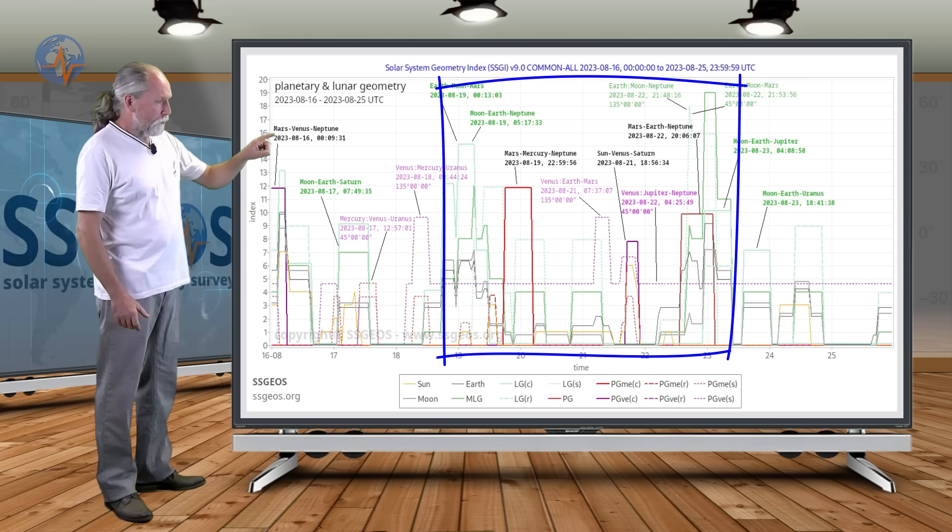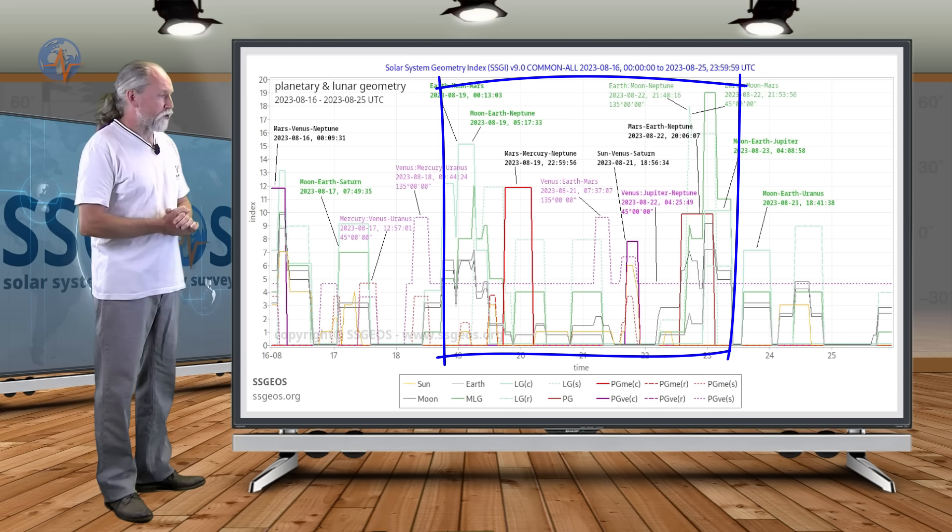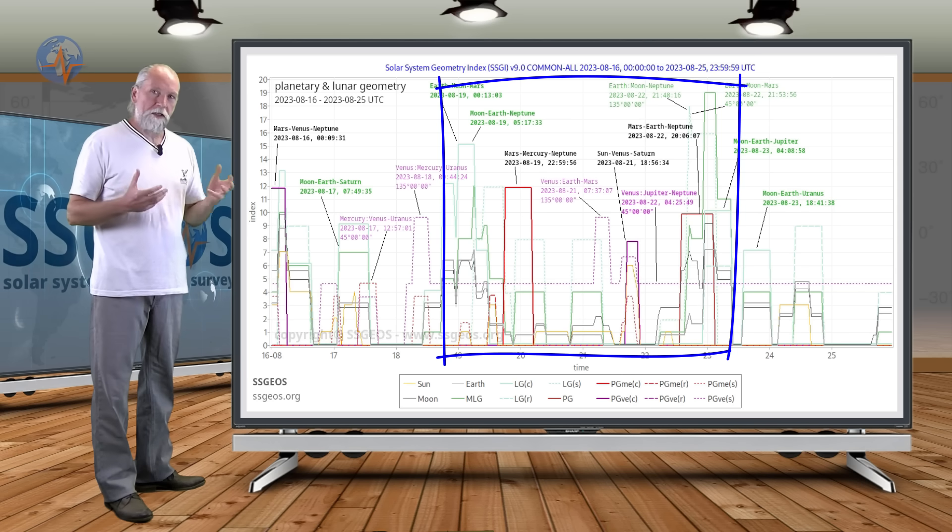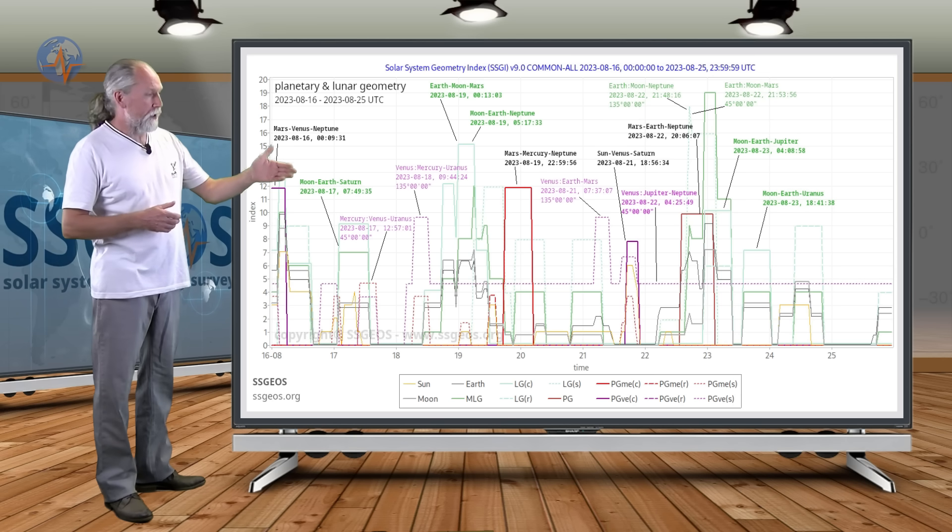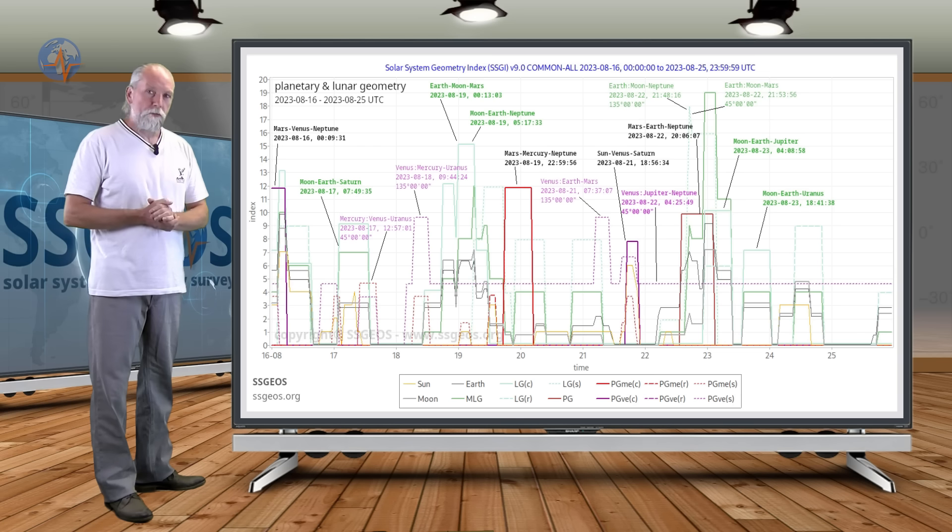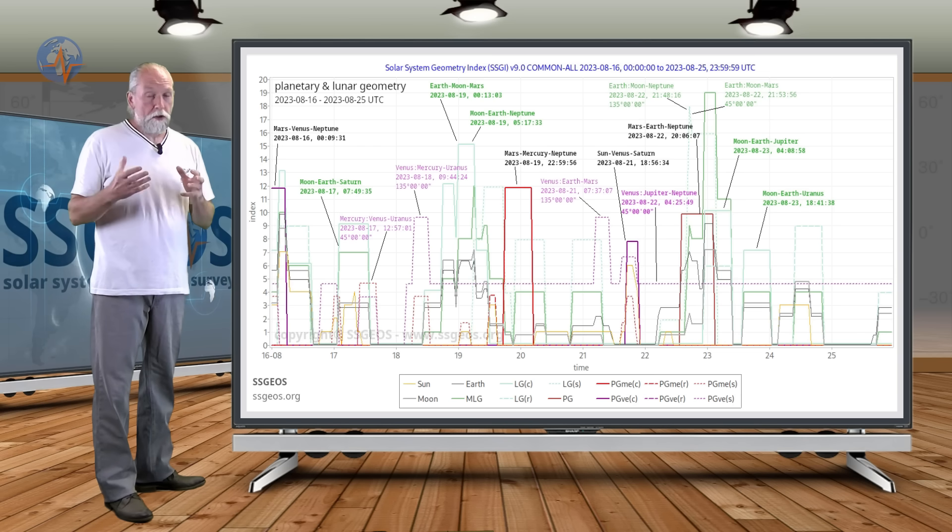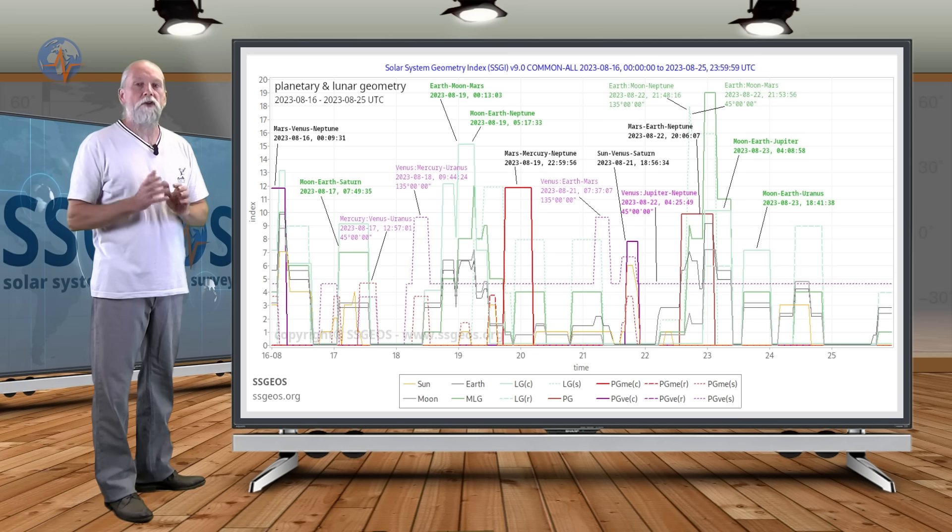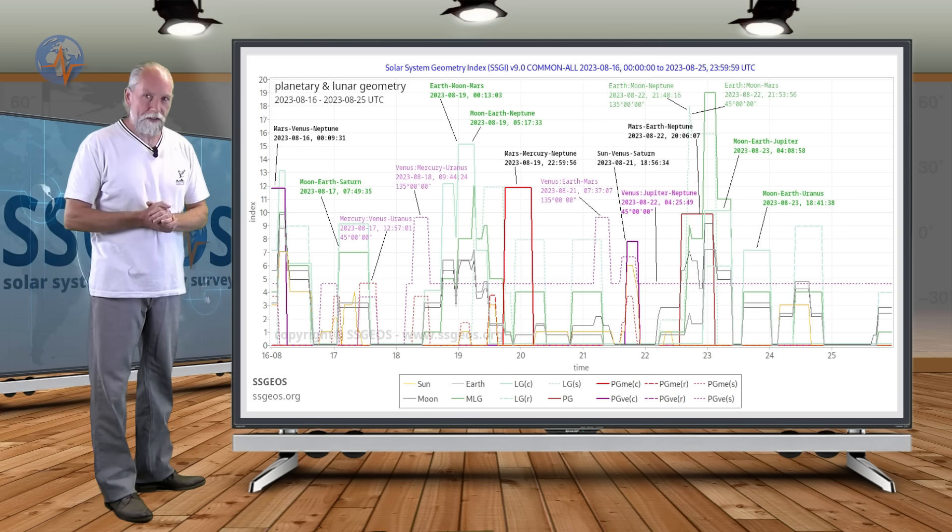This is probably the most critical time with this geometry with Mars and Neptune. And also what you do not see here is just outside of this SGI graph on the 26th when the Moon makes the opposite right angles with Mars and Neptune. And we could see the largest seismic event potentially around the 28th as a result.